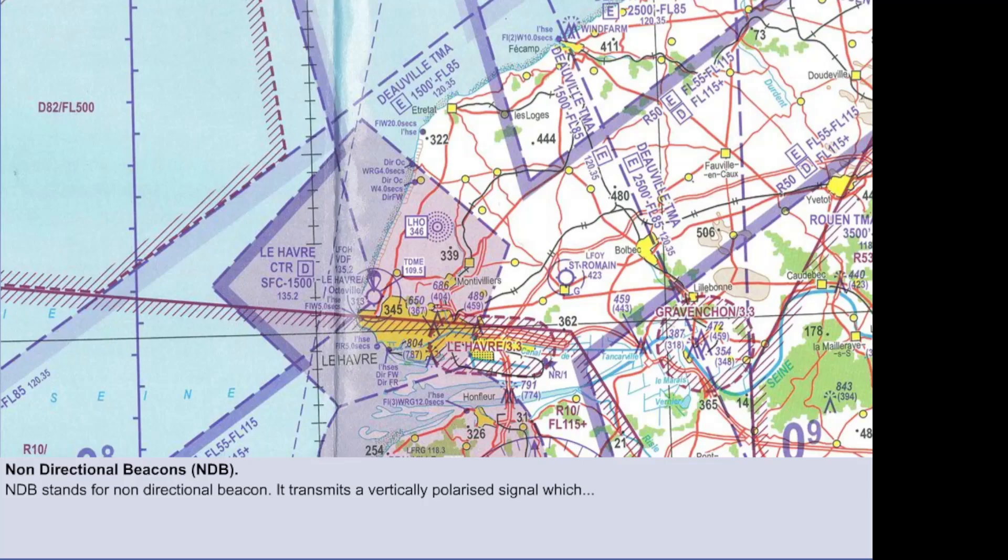On aviation charts, its symbol is three circles of dots around a solid circle around a single dot.